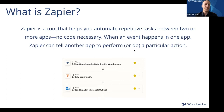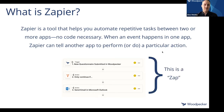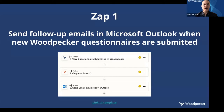It's very cool — it's definitely changed the way we think about running our business. So a Zap is an automated workflow. What we're going to do now is hop into our first Zap, where we're going to walk through our first scenario of sending follow-up emails in Outlook when a new Woodpecker questionnaire is submitted. I'm going to pop out of my presentation and go over to Zapier.